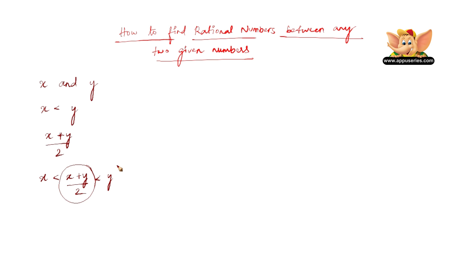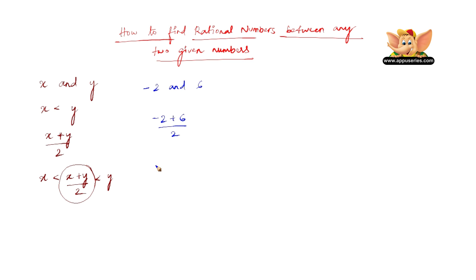So now let us go to an example. Let us find a rational number between minus 2 and 6. A rational number between minus 2 and 6 would be nothing but minus 2 plus 6 by 2, which is nothing but 4 by 2, which is 2. So therefore, 2 is a rational number between minus 2 and 6.